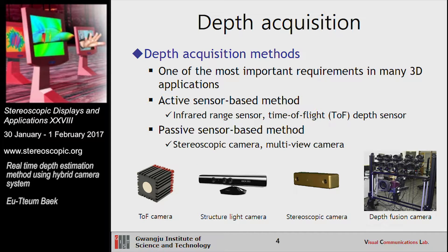Depth acquisition is one of the most important requirements in many 3D applications. Depths can be used in many immersive 3D content. Depth acquisition can be classified into active sensor-based method, passive sensor-based method, and hybrid sensor-based method. Active sensor-based method uses active sensors like IR sensor and depth sensor, which emit light and then detect the reflected light to estimate depth. Passive sensor-based method uses passive sensors that detect natural light from the sun or a lamp.